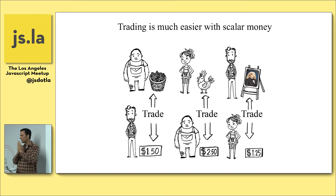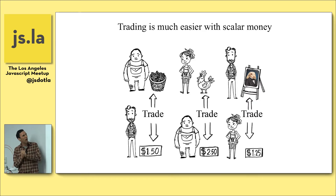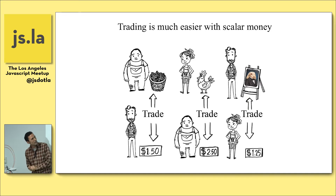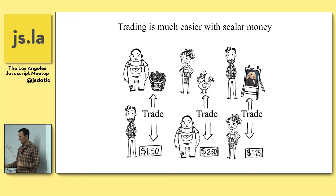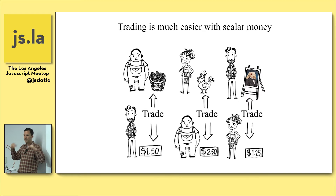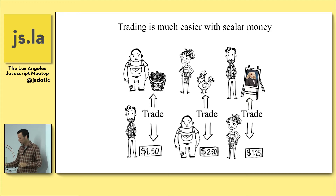Along comes scalar money commerce and this made everything a lot simpler. First of all, highly divisible — we can do hundreds of a dollar. All we have to do is Sam pays me $1.50, he gets the peanuts. Judy pays $2.50, he gets the chicken. I pay $1.25 and I get the ironic fancy rabbit portrait. This is really cool because we can do all these trades in parallel and then figure out what we want to buy later. It's much, much faster than the old trading approach.